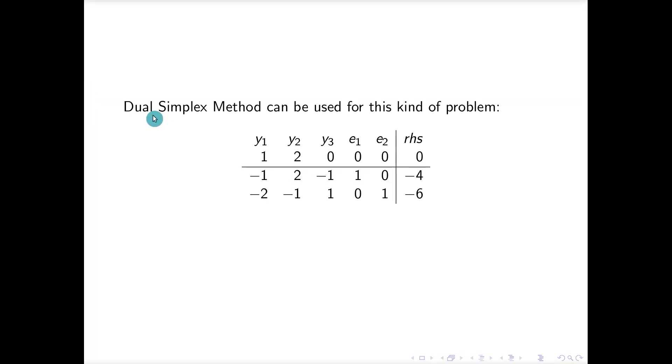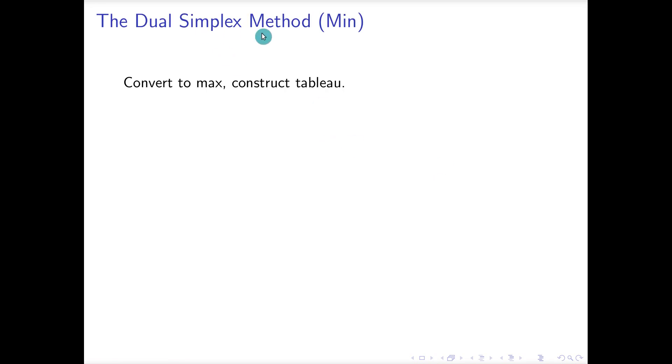All right, so in the last video we were talking about setting up the dual simplex method. I gave you motivation for that using this tableau which came from a minimization problem with greater than or equal to signs. The idea was that instead of looking for row zero and pivoting on those columns, we're going to use these right hand sides, find the pivot row first, and then use the pivot column. So let's review how that went. This is called the dual simplex method.